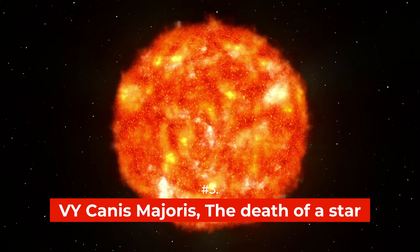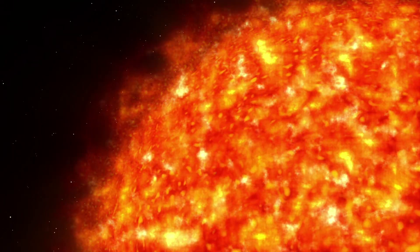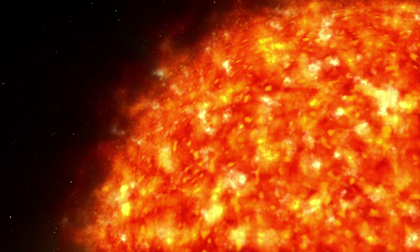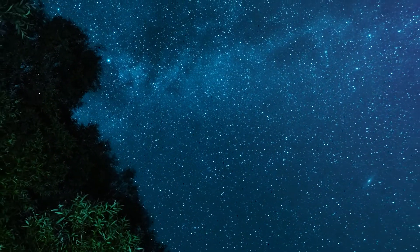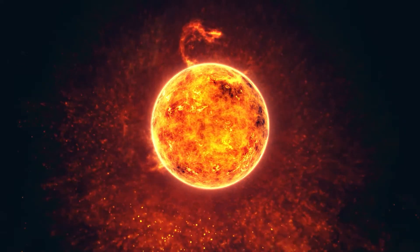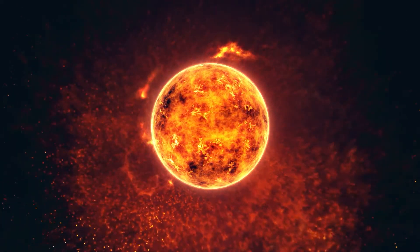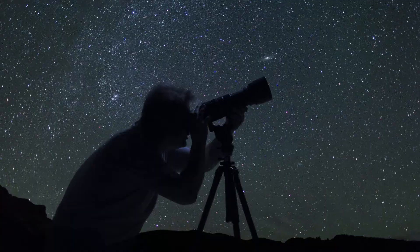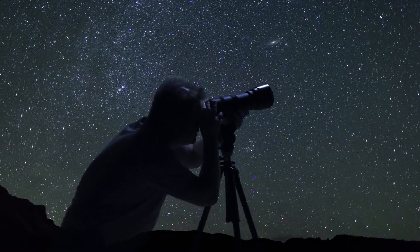Vy Canis Majoris, the death of a star. Hypergiant Vy Canis Majoris is possibly the largest star in our galaxy and it is only 3009 light years away from Earth. Even though hypergiants are brighter and more massive than the sun, they lose their mass more rapidly than other stars. Because of its size and proximity to Earth, it is one of the most observed stars.